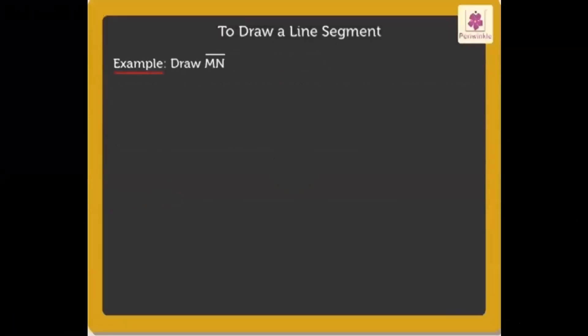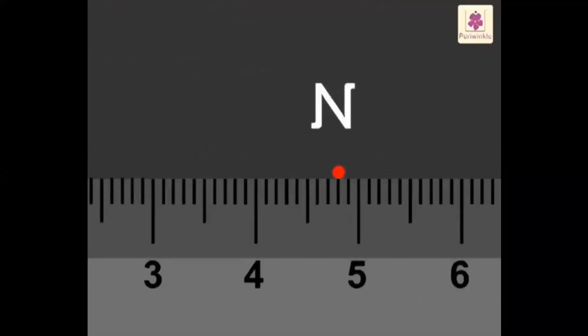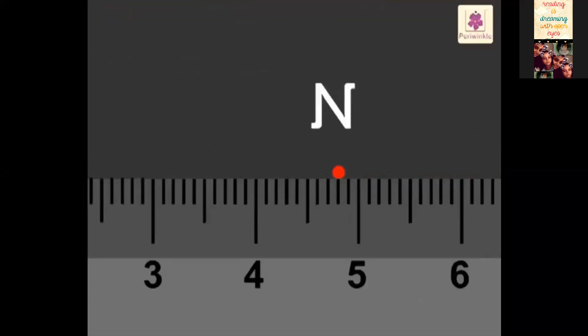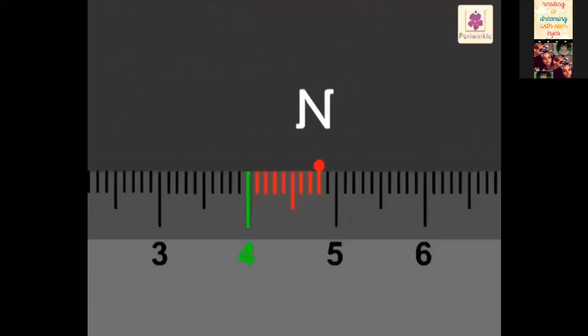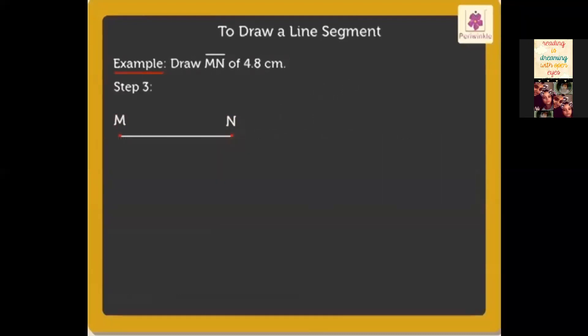To draw a line segment: Draw a segment MN of 4.8 centimeters. This can be done in three steps. Step 1: Take a ruler and mark point M at zero centimeters on the ruler. Step 2: Next, mark point N such that it coincides with the eighth division after the four centimeter mark on the ruler. Now, join the points M and N to form line segment MN and mark it as 4.8 centimeters.